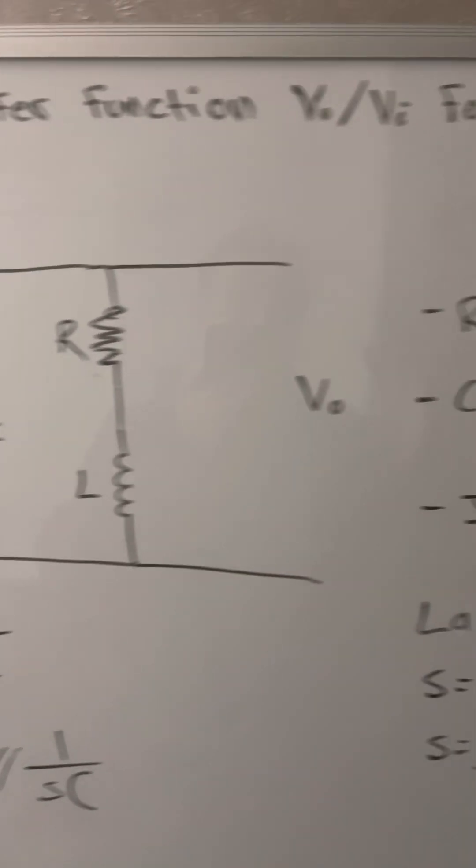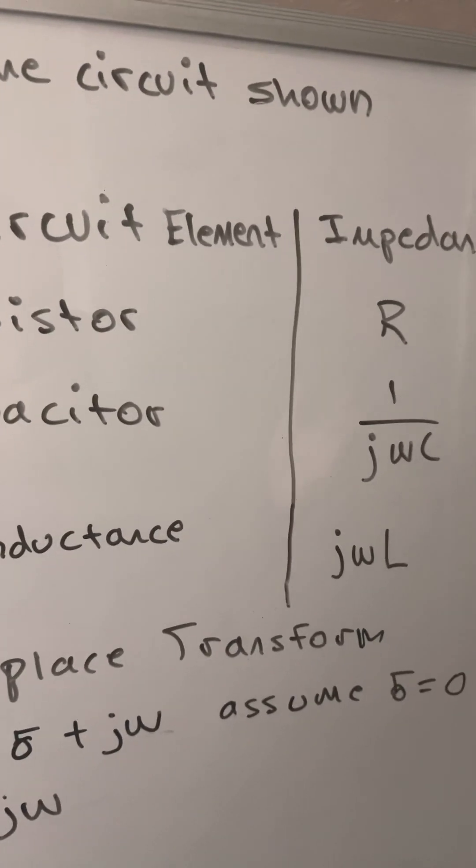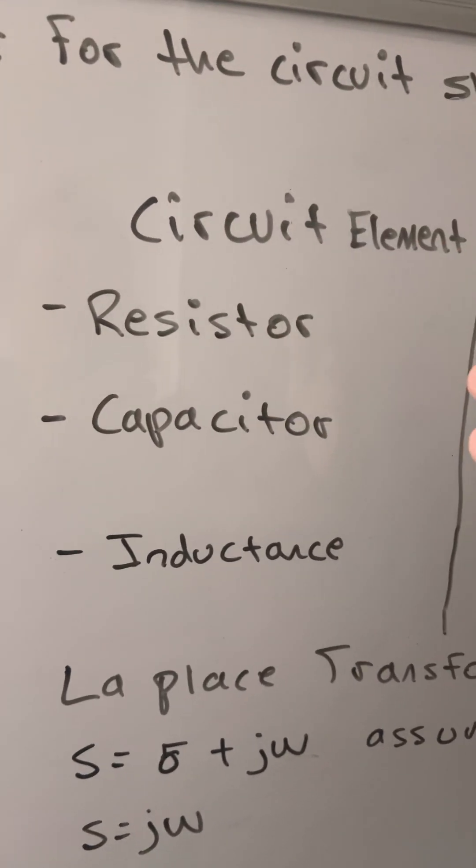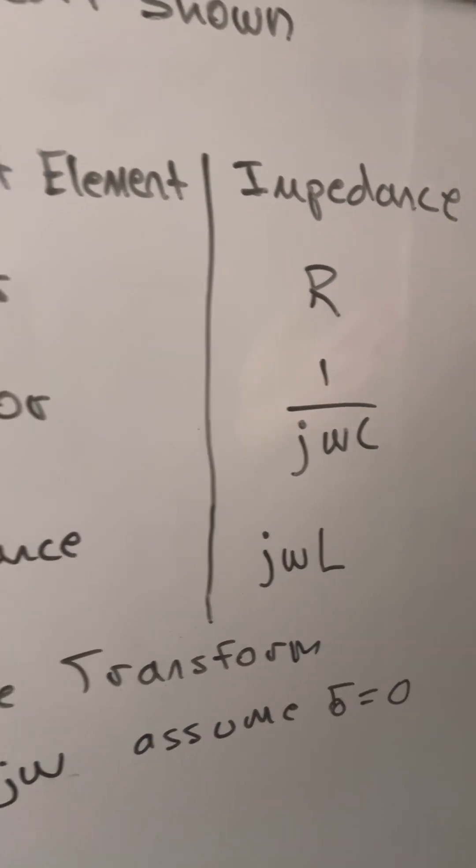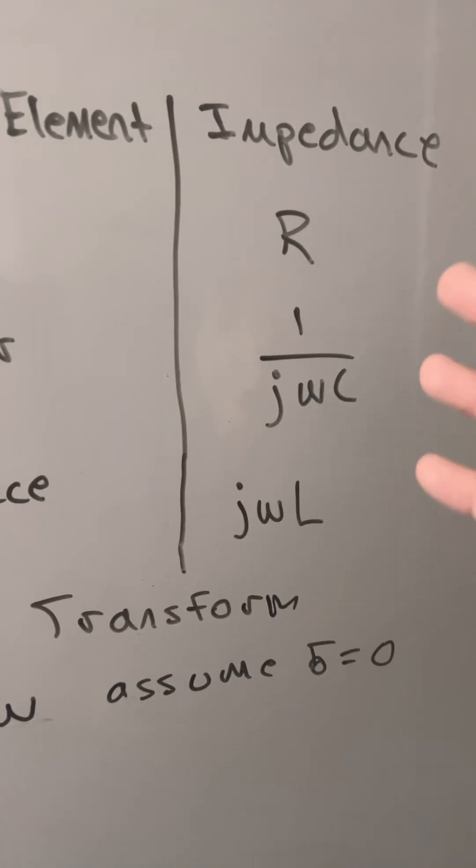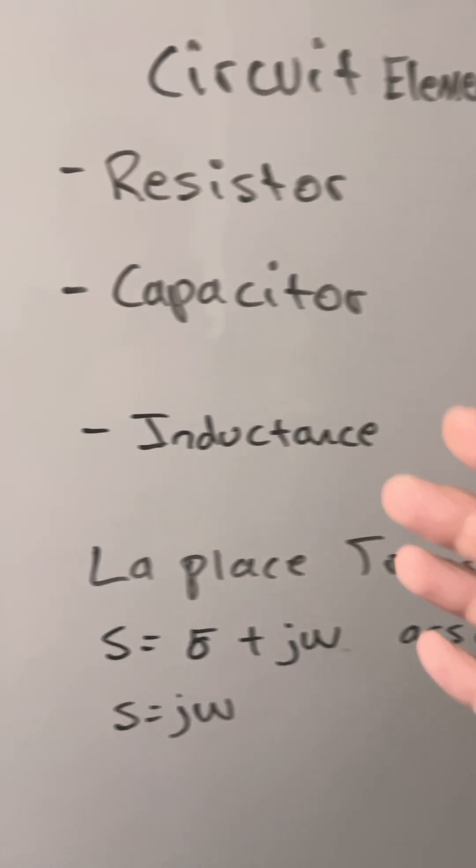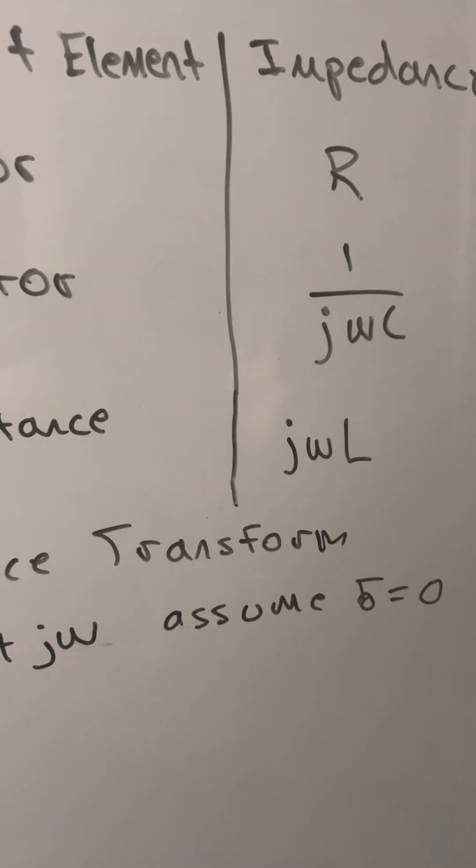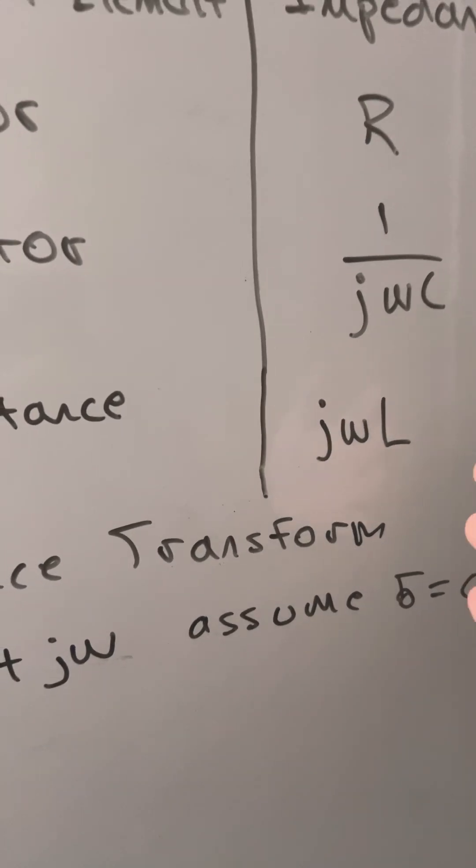we need to understand the circuit element and then the impedance. So for resistor, the symbol will stay the same for impedance as R, and for capacitor, it will change to 1 over j omega times the capacitor. And for inductance, it will be j omega times the inductance, L.